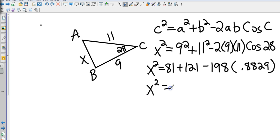So this gives me 81 plus 121. That's going to be, let's say, 202. And multiply those two together, that gives me 174.823.